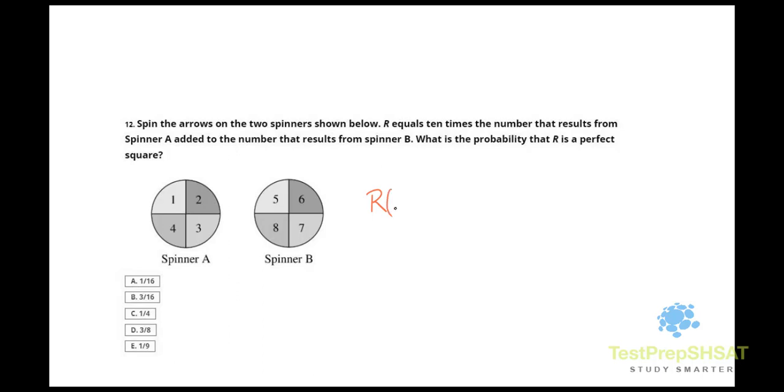The probability that R is a perfect square equals the number of perfect squares that we can count in the set divided by the number of total outcomes, assuming each outcome is equally likely. That is how we calculate probability.